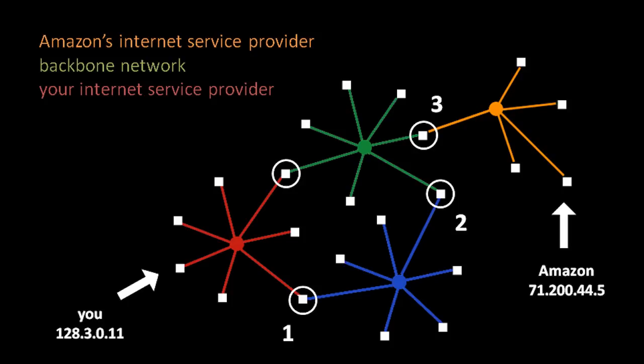That actually explains why the typical internet connection usually allows you to download data — receive data — faster than you're allowed to upload it, to send it. Because it costs your internet service provider a lot more money when you send data rather than just receive it.